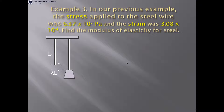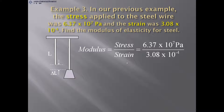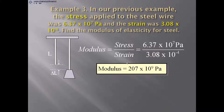Example: In the previous example, the stress applied to the steel wire was 6.37 × 10⁷ Pascal and the strain was 3.08 × 10⁻⁴ (dimensionless). The modulus of elasticity = stress / strain = 6.37 × 10⁷ / 3.08 × 10⁻⁴ = 207 × 10⁹ Pascal. The longitudinal modulus of elasticity is called Young's modulus, denoted by Y.